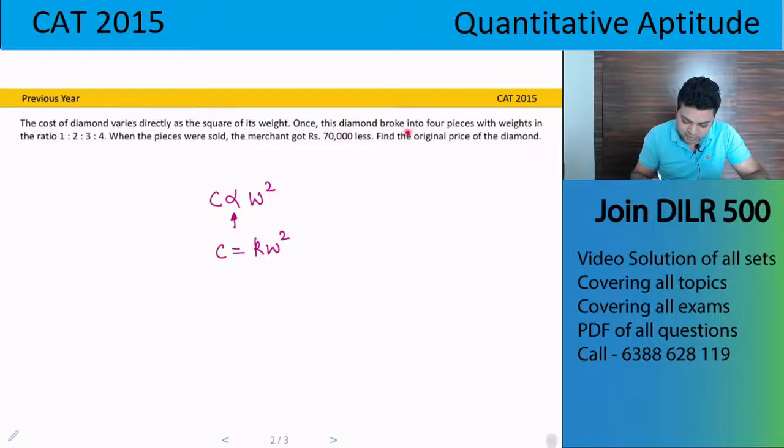Once this diamond broke into 4 pieces with weights in the ratio 1 is to 2 is to 3 is to 4. So now the weight is x, the second piece is 2x, the third piece is 3x, the fourth piece is 4x.